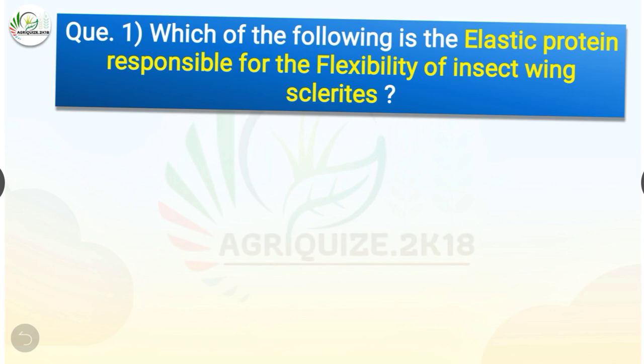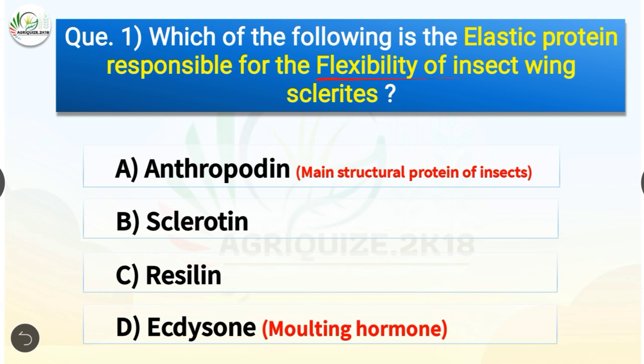Question number one: which of the following is the elastic protein responsible for the flexibility of insect wing sclerites? The options are arthropoteins, sclerotin, resilin, or ecdysone. The correct answer is option C, resilin. Resilin is the elastic protein responsible for the flexibility of insect wing sclerites, whereas arthropoteins are the main structural protein of insects.